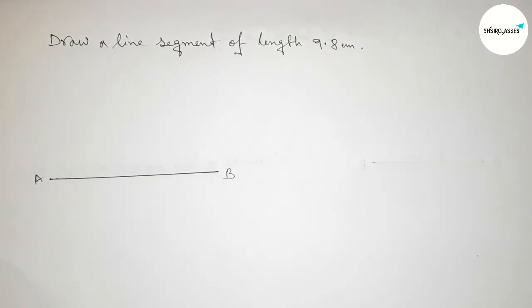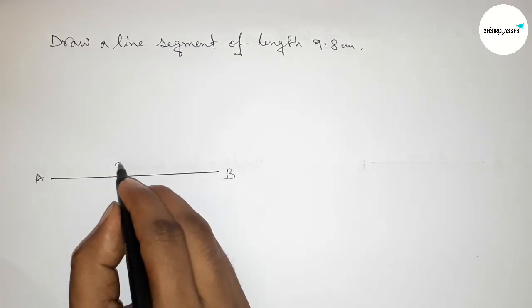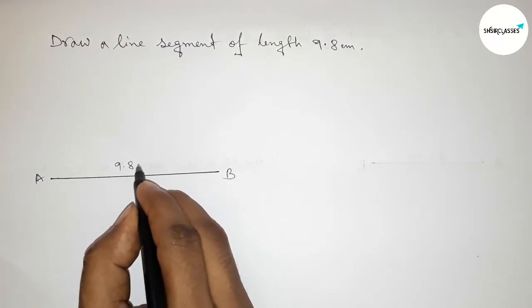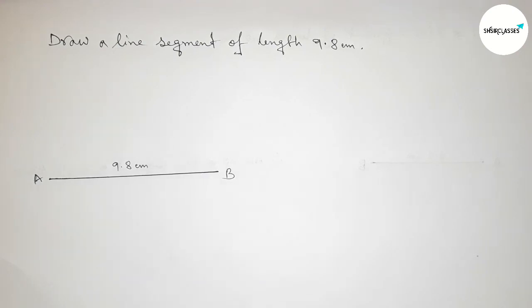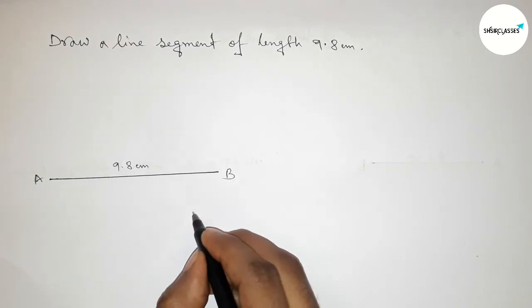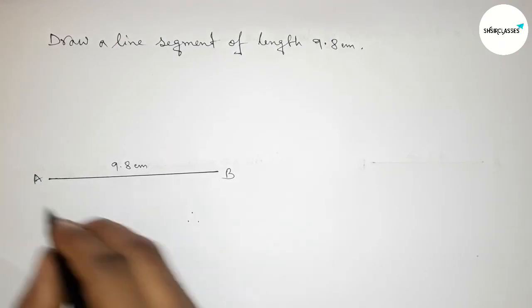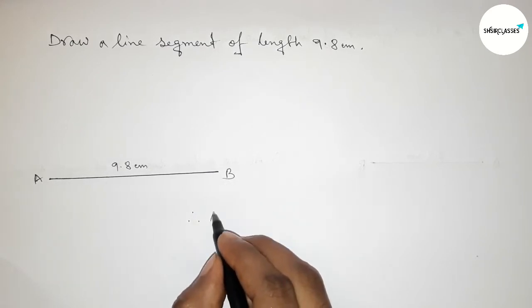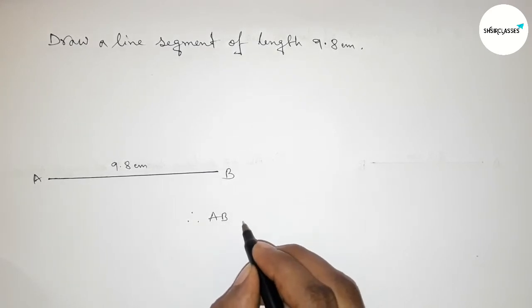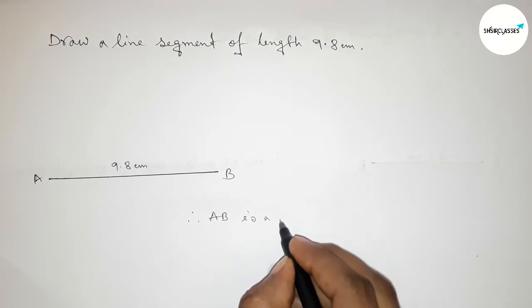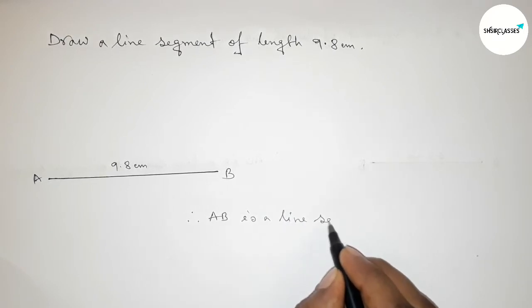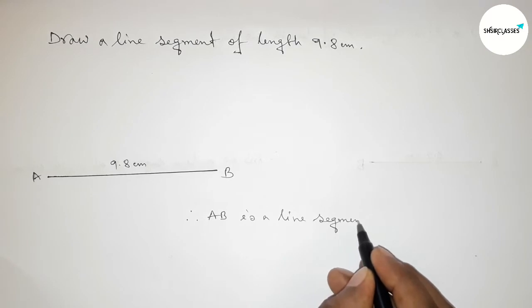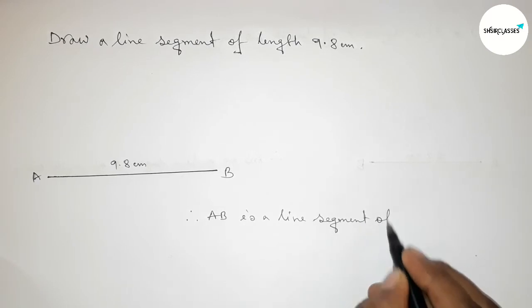So AB is a line segment of length nine point eight centimeter. Therefore, here we can say that AB is a line segment of length nine point eight centimeters. With the help of a ruler, you can draw this line at home by this way.